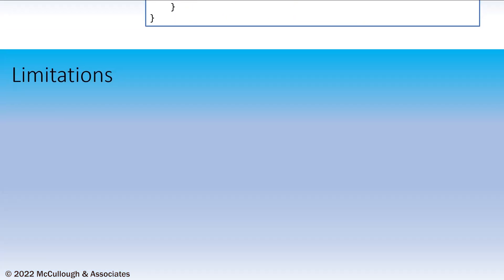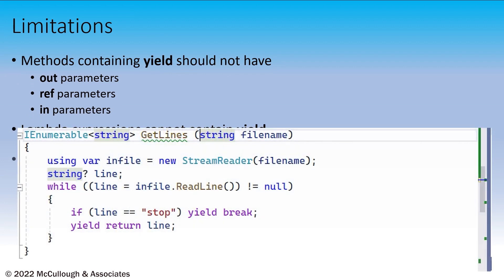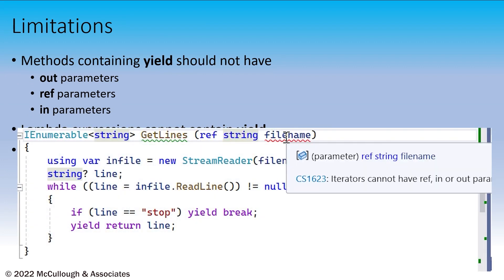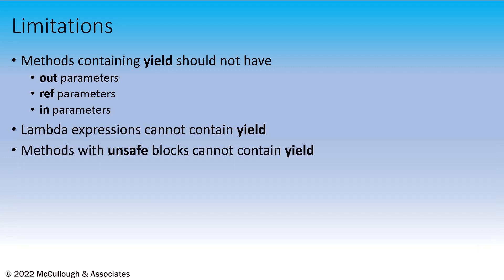We can use yield return in any method that returns an IEnumerable. We cannot use it if the method has out, ref, or in annotated parameters. This would also apply to lambda expressions, since lambda expressions effectively have ref parameters to the outer scope variables. In addition, methods that contain unmanaged code cannot use yield.